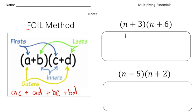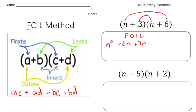Let's try it. We have (N + 3) times (N + 6). The first terms are N and N, so N times N gives you N squared. The outside: N times 6 gives you 6N. The inside: 3 times N is 3N. And the last: 3 times 6 gives you 18. Now simplify — 6N and 3N combine, giving N squared plus 9N plus 18. There's the product.